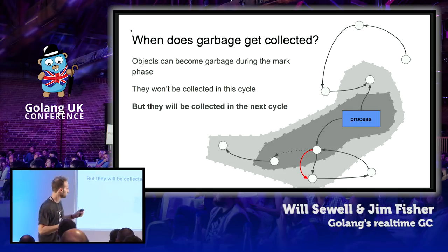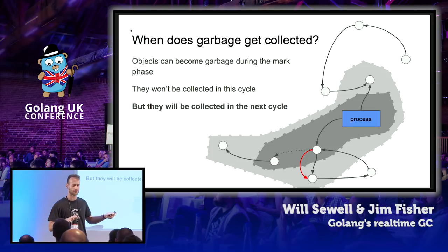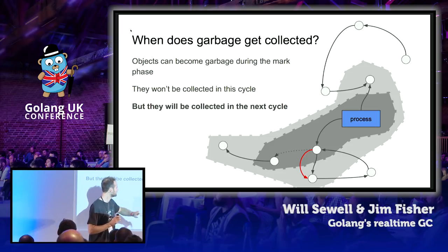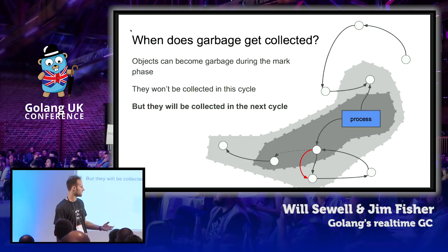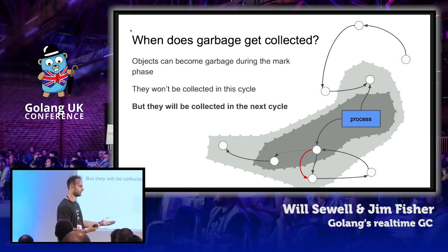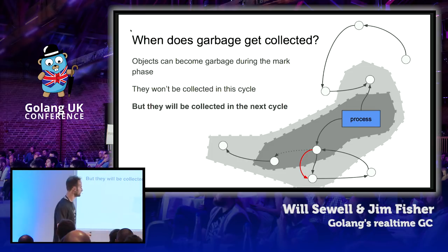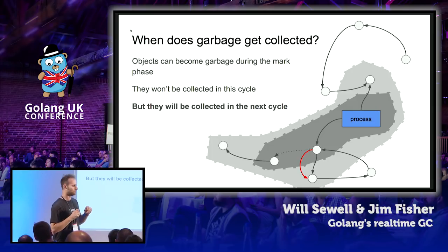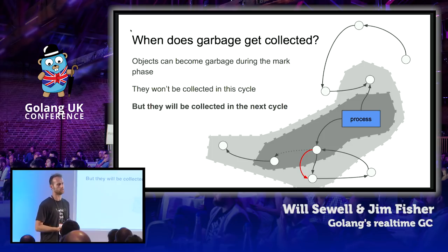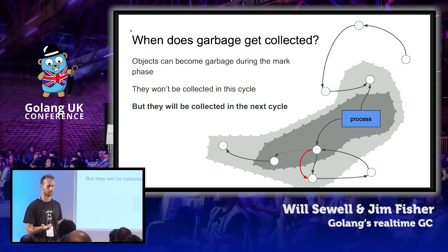Another thing you might have noticed is that it seems like you might be able to leak objects during this process. For example, we've already marked an object as black — as not garbage — and yet the process, because it's running concurrently, can come along and turn that object into garbage by changing a pointer. This object, which has already been marked as not garbage, suddenly becomes garbage. Does that object get leaked? The answer is no.